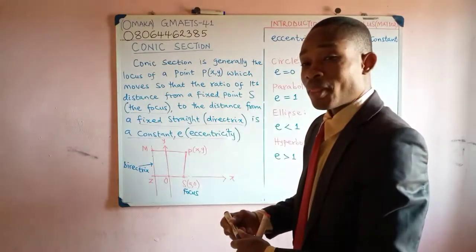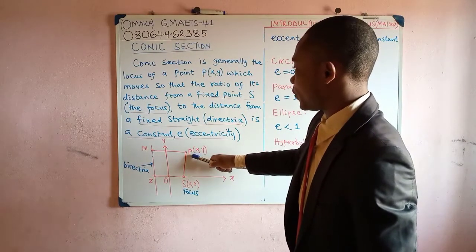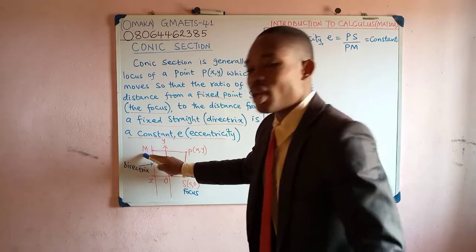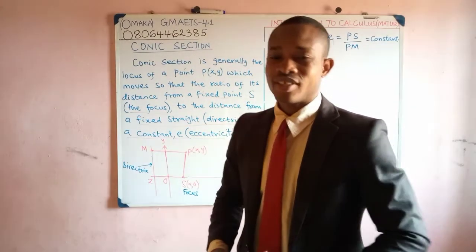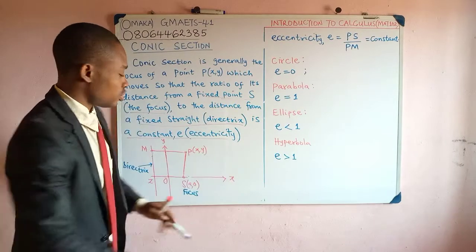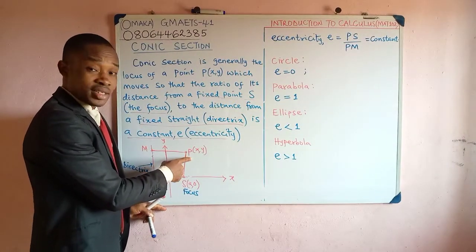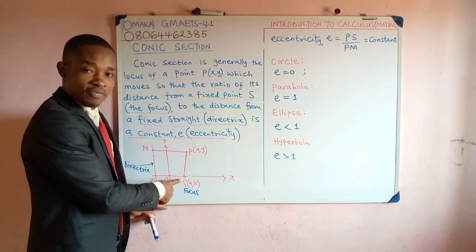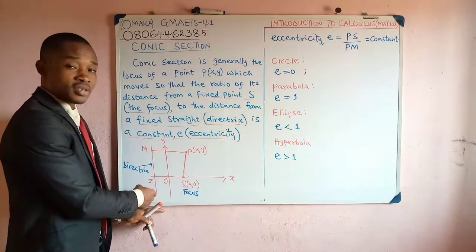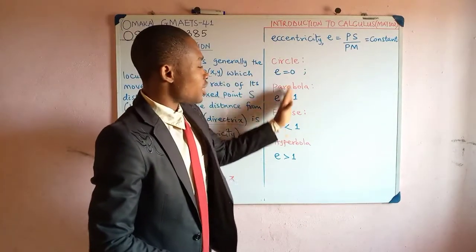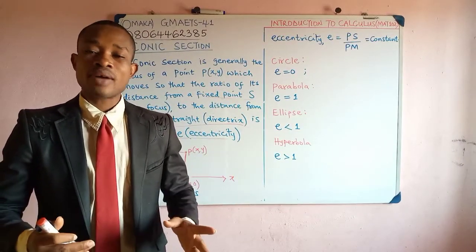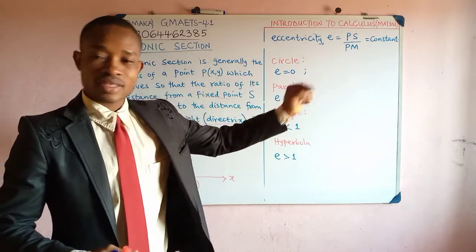A conic section is therefore the locus of point P such that if you take the ratio — the distance PS to PN — it will always give you a constant called the eccentricity. The eccentricity, which is a constant for a conic section, is the ratio of the distance to the fixed point called the focus divided by the distance PN, that is the distance from this point to the fixed straight line. We have established that there are four kinds of conic sections.